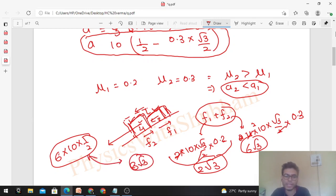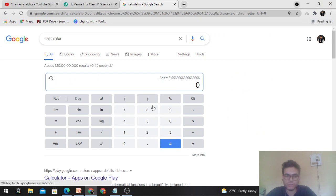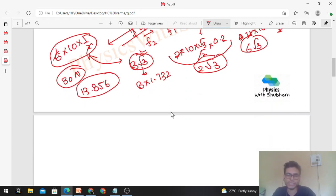So you have to compare these two forces. The limiting value of friction on this system is 30 newtons and this is 8 root 3. Using 1.732 for root 3, acceleration will be 30 minus 13.856 divided by the mass of the system, which is 6 kg. So this will be the acceleration of both the blocks.